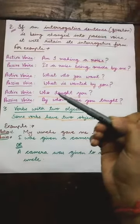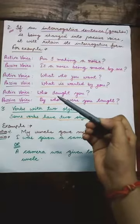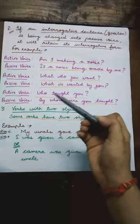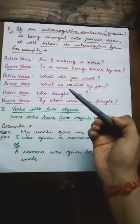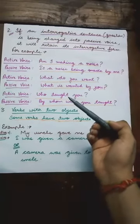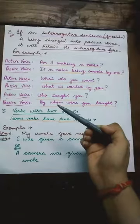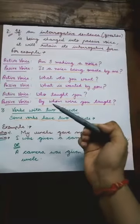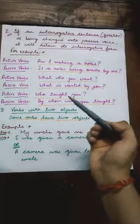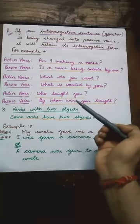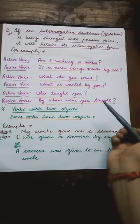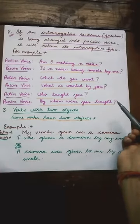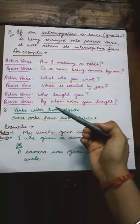Next example: 'Who taught you?' सबसे पहले हम find out करेंगे कि कौन सा tense use हो रहा है. यहाँ पर कोई भी helping verb नहीं दी गई और form of verb second form है — so यहाँ past indefinite tense है. Formation: WH word 'who' को change करेंगे 'by whom' में. According to the subject, helping verb 'were' use होगी. Then third form 'taught'. At last question mark. So: 'By whom were you taught?'